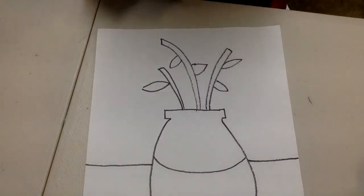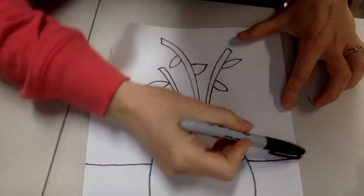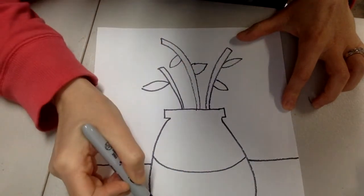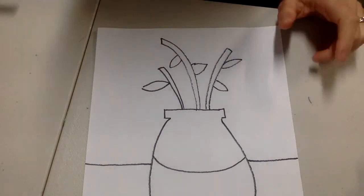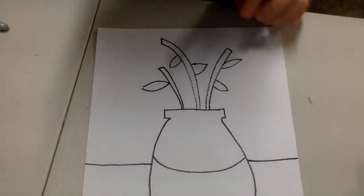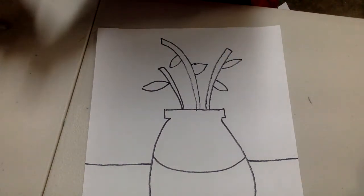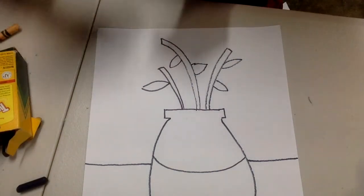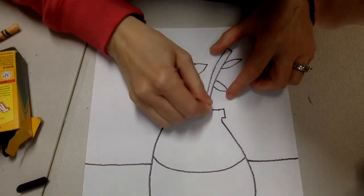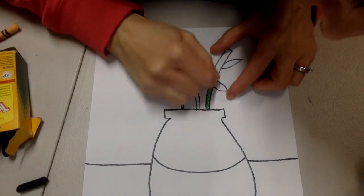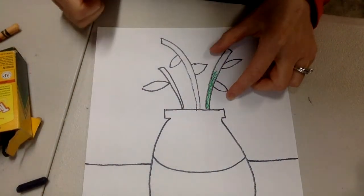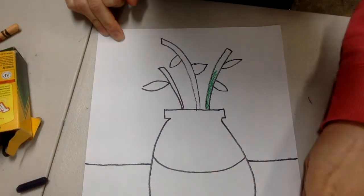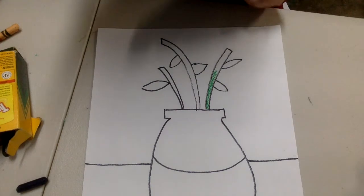What you can do today before we stop the video is you can trace over your pencil with a black marker, black crayon, black pen, something black, and then what you can do is you can color in your stems green, and you can color in your flower vase. When you go to do your flower vase, I want one top to be one color, the bottom to be another color, and then your table to be a third color.